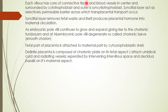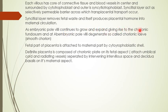Stem villi branch first into intermediate villi and then into terminal villi — the best site of exchange between maternal and fetal blood. Stem villi continue to attach to the decidua for support. The cytotrophoblastic shell is the junction of fetal with maternal part; the intervillus space is where maternal blood is present. From the chorionic plate, progressive branching occurs in the villus tree. Each villus has a core of connective tissue with blood vessels in the center, surrounded by cytotrophoblast, then syncytiotrophoblast. The syncytial layer acts as a selective permeable barrier across which transplacental transport occurs, removes fetal waste, and produces placental hormones entering maternal circulation.